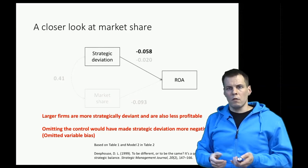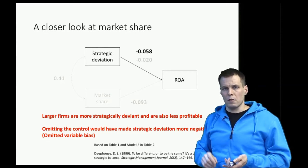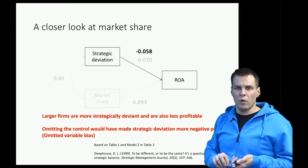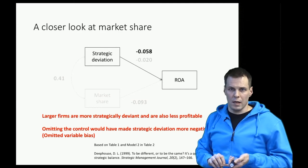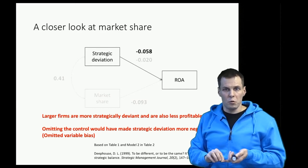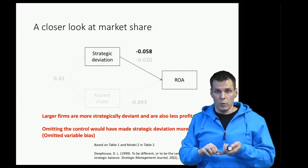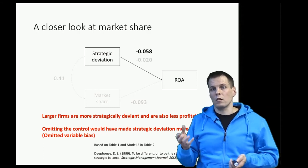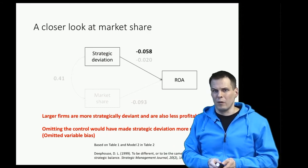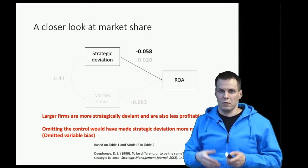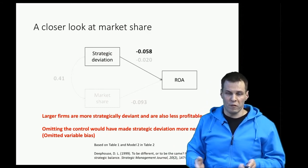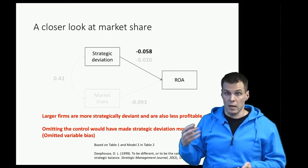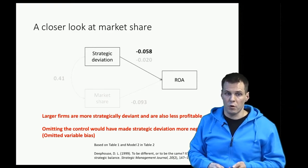Because controls are so important for your causal claims, you should take very seriously which variables you include and really think about what kind of alternative explanations there are for the observed association — or the association that you expect to observe.